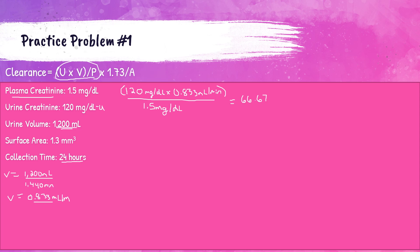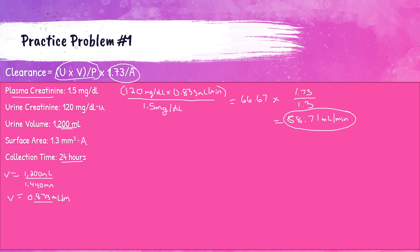We need to do a correction for kidney mass proportional to body size. So we take 66.67 and multiply it by 1.73 — that's the standard body surface area constant — then divide by A, which is the patient's body surface area of 1.3. So 66.67 times 1.73 divided by 1.3 equals 88.71 milliliters per minute. And that is your creatinine clearance answer for this particular patient.